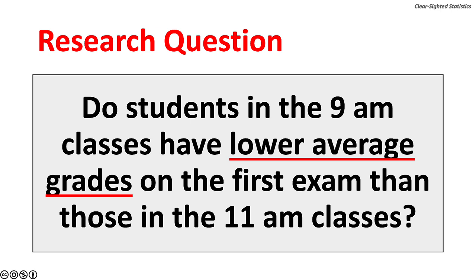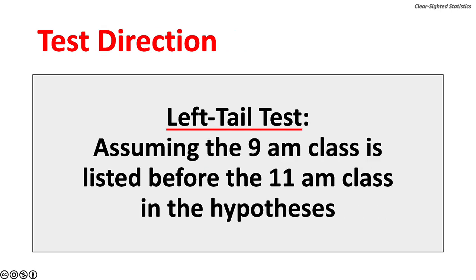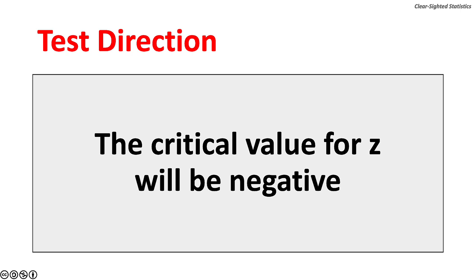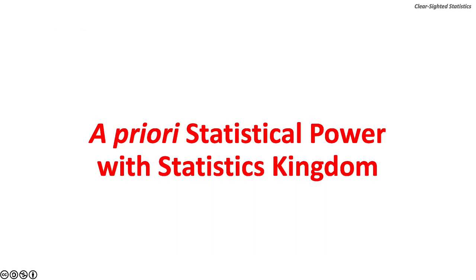The research question: do students in the 9am classes have lower average grades on the first exam than those in the 11am classes? The phrase 'lower average grades' makes this a left-tailed test, assuming the 9am class is listed first. Z-values are assigned; the critical value for a left-tailed test will be negative. An a priori statistical power calculation should be done using the Statistics Kingdom website, as G-Power lacks a calculator for this test.